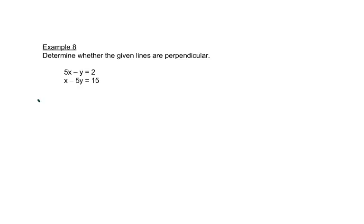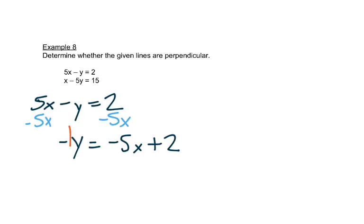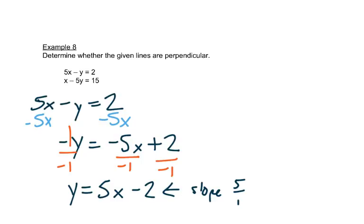Okay, so let's look at this. We're going to start off again by putting these in a format which it's easier to read the slope. So we'll subtract 5x from both sides for this first equation. That gives us negative y equals negative 5x plus 2. This is really a negative 1, so we'll divide everything by a negative 1, which changes all of our signs. That gives us positive 5x minus 2. So my slope here is 5 over 1, positive 5 over 1.